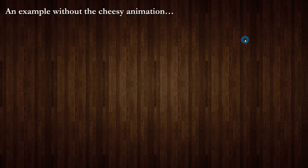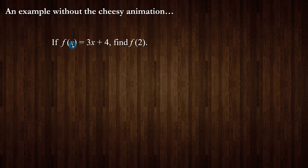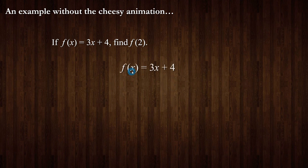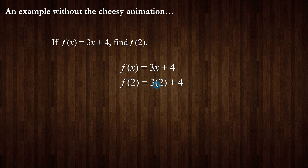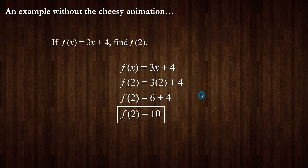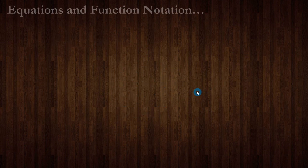Let's do an example in writing. Our function is f(x) equals 3x plus 4 — it takes an x value, multiplies it by 3, and adds 4. We want to find f(2). We substitute 2 for every x: f(2) equals 3 times 2 plus 4. Three times 2 is 6, and 6 plus 4 is 10. So f(2) equals 10. That's how we use function notation.